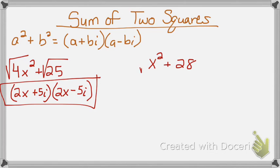In the second example, I'll do the same thing, take the square root of each one, square root of x squared gives me x, but 28, well that's not a perfect square.